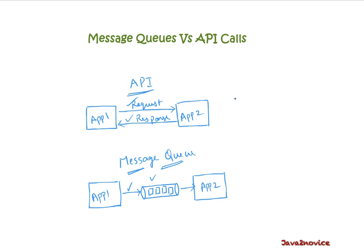The major advantages of message queues are decoupled architecture — one application's job is to just send messages to the queue, and another application's job is just to receive messages from the queue. This separation allows components to operate independently while still communicating with each other. Fault tolerant — even when the receiver application is down, messages are still stored in the queue until it comes back up and retrieves them. Scalability — message queues improve application scalability by freeing up resources on application servers.